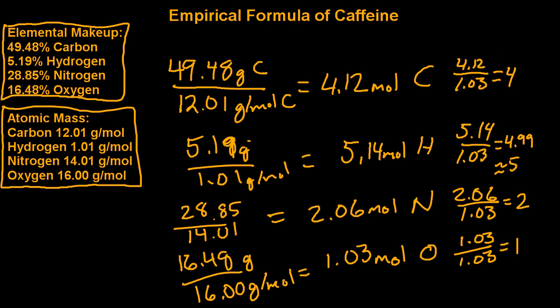So now we can write out our empirical formula, which will be 4 carbons, 5 hydrogens, 2 nitrogens, and just 1 oxygen.